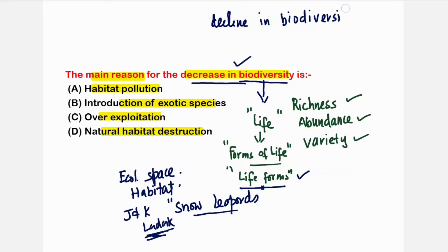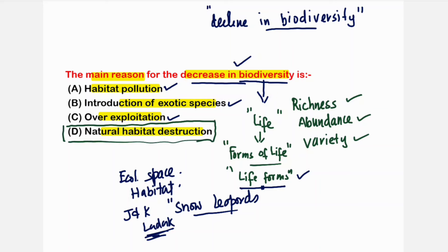All across the world many species are declining or have gone extinct. Habitat pollution affects aquatic species, introduction of exotic species is another reason, and over-exploitation is also a cause. However, the conclusion of all these options is the loss of natural habitat of living species. Option D — natural habitat destruction — is the most appropriate answer, as it results in the decline of biodiversity across the globe.